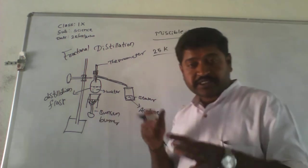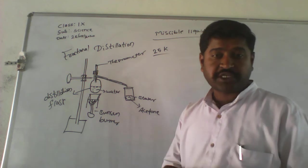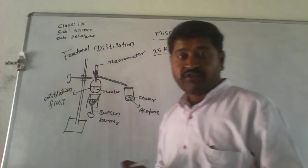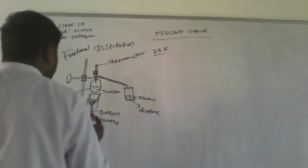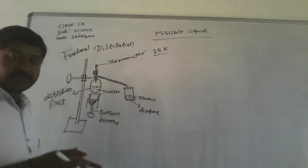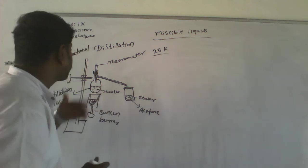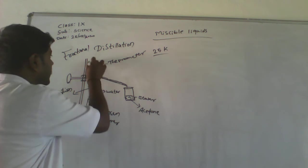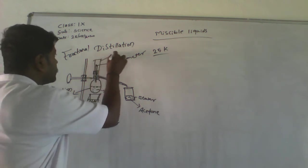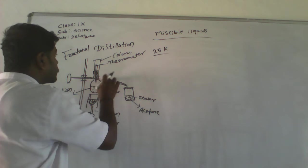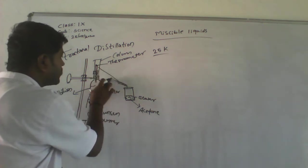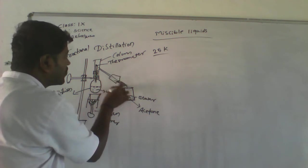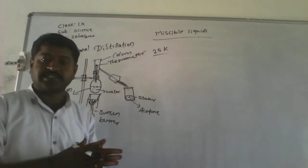The process is going to be the same and the apparatus are also going to be the same. But what we are adding here is another apparatus — the Fractionating Column — just above the Distillation Flask. So we have: Distillation Flask, then the Fractionating Column, and to this column the condenser is added.